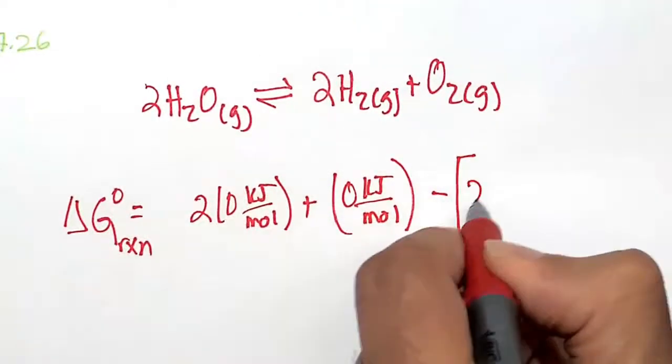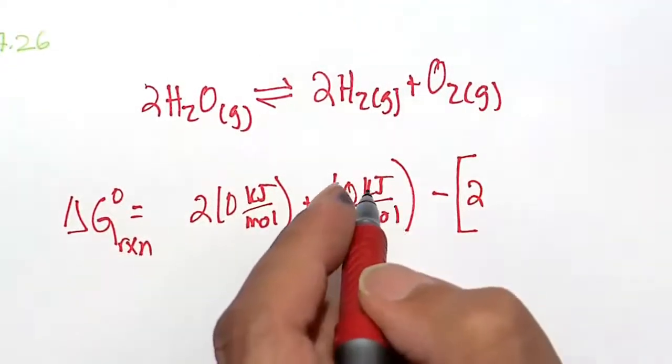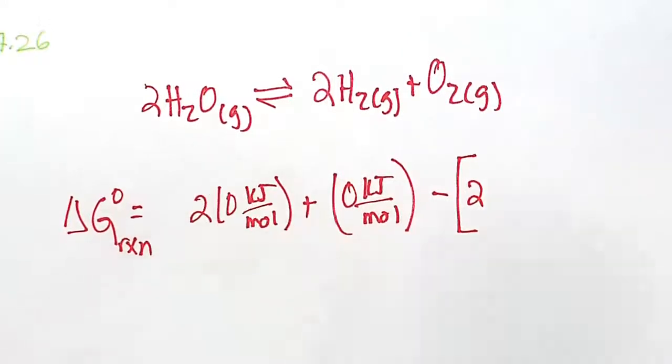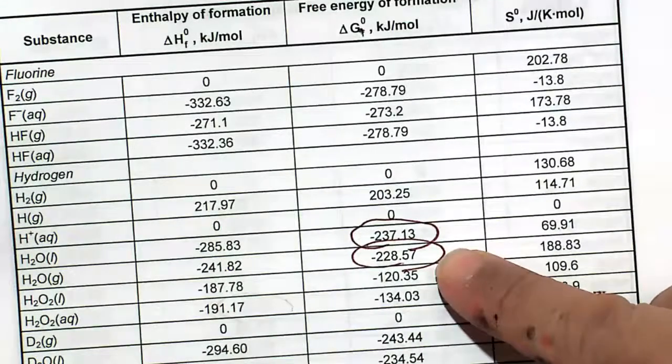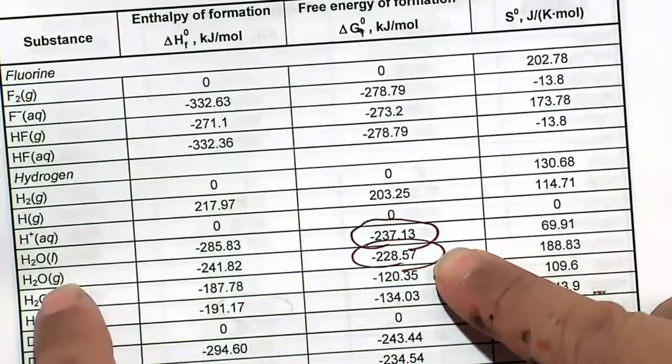Minus two times water, and this time we want to make sure we're using water as a gas, because that is what is in our problem, water as a gas. Looking that up in our table in the back of the book, we get a value of H2O gas, making sure we're using gas.